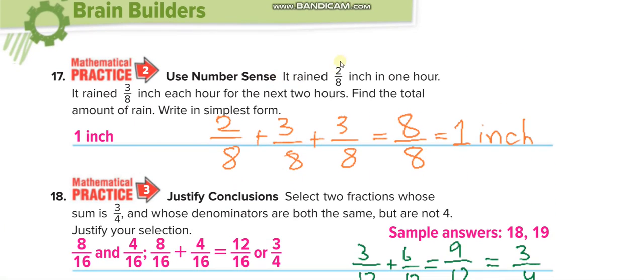It rained 2 eighths inch in one hour. It rained 3 eighths inch each hour for the next two hours. So you will add this one and this one two times because it is for the next two hours: 2 eighths plus 3 eighths plus 3 eighths. 2 plus 3 plus 3 equals 8 eighths, which equals 1 inch.